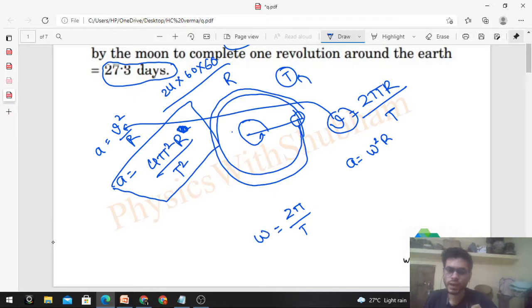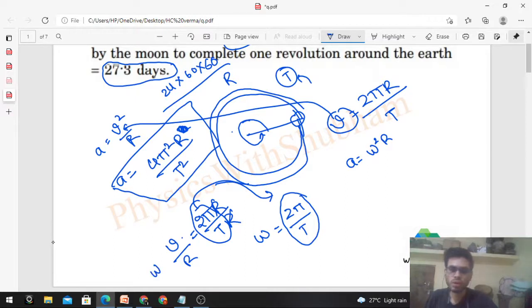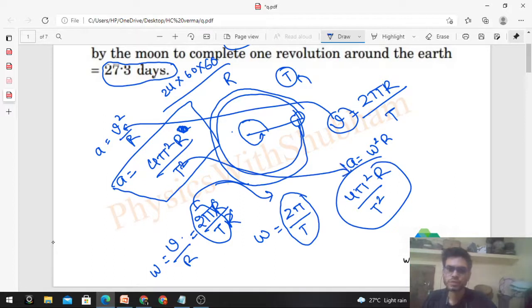You can also find angular speed from V by R. The value of V we calculated is 2πR upon T, divided by R. So again the same: 2π by T. Once omega is found, then the value of acceleration will be omega squared into R, which is 4π² upon T² into R. See, same result. Fine, so this is how you can calculate it.